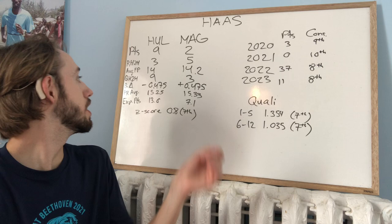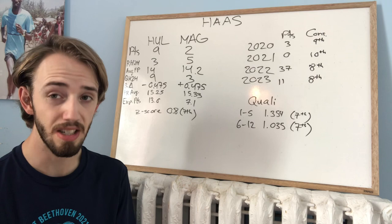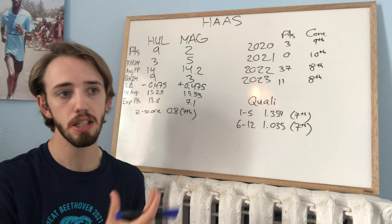Qualifying head-to-head, this one's not really close, 9-3 in favor of Hulkenberg. Qualifying delta is 0.475, so about over 4.5 tenths of a second in favor of Hulkenberg. So this is the one that's really not close.